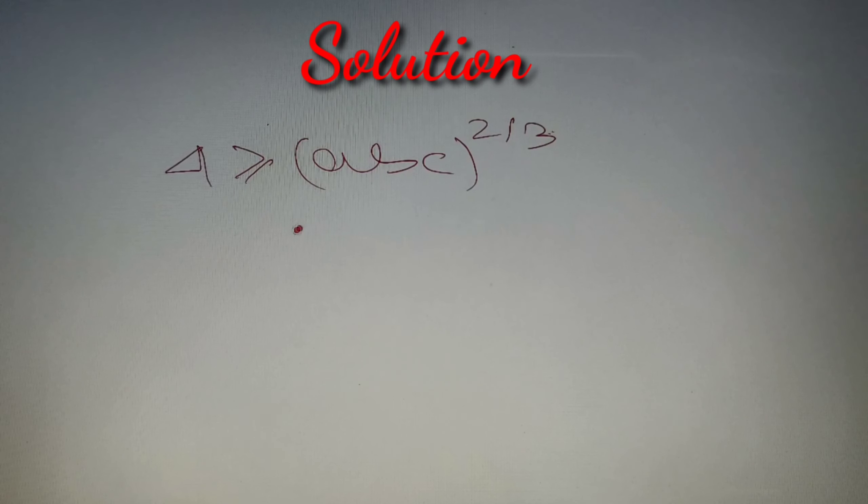So according to our last step, we have got abc raised to power 2/3 is always less than or equal to 4. Now we have to find the maximum value of abc, so let's shift all the power to the left-hand side.